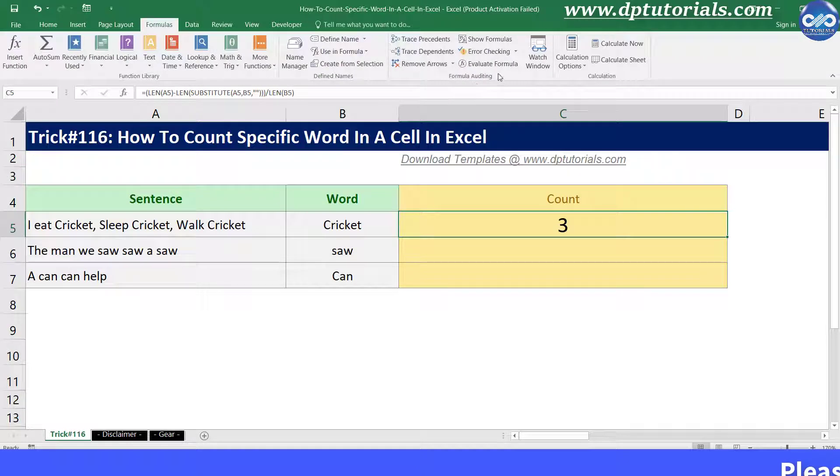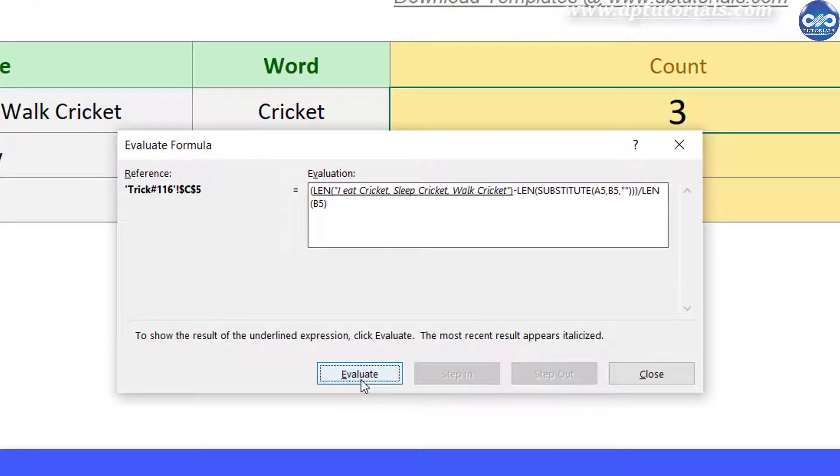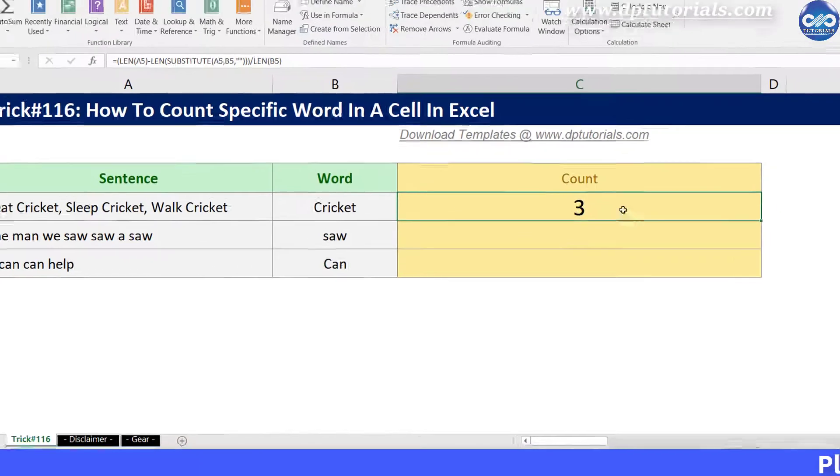So if you run the Evaluate Formula from the Formulas tab, you will understand that the original length is 42 minus, after substituting, the length becomes 21, which equals 21 divided by the length of the word cricket, that is 7. So 21 divided by 7 equals 3. Got it friends? So the answer is 3.